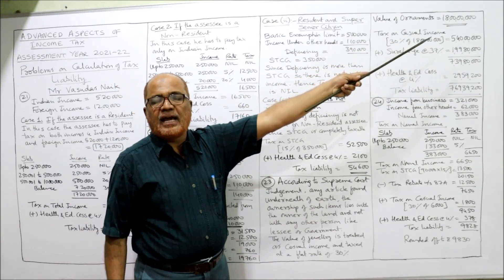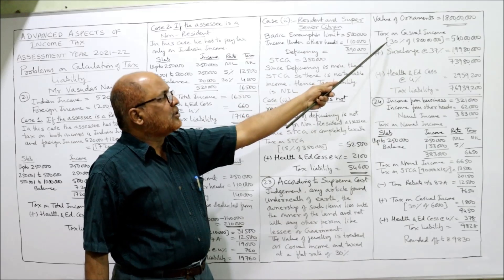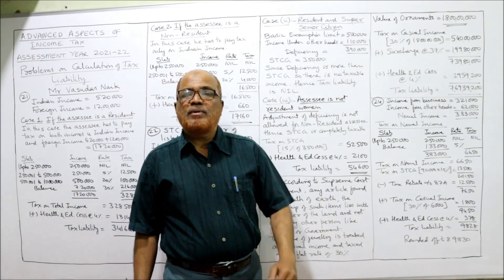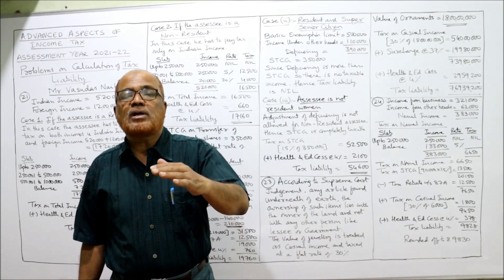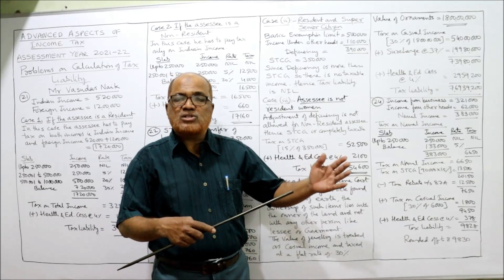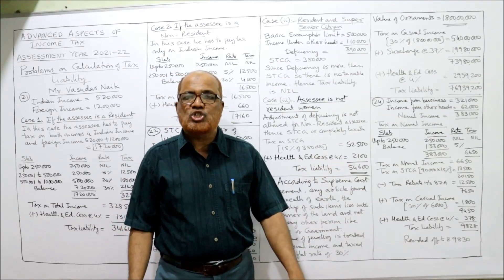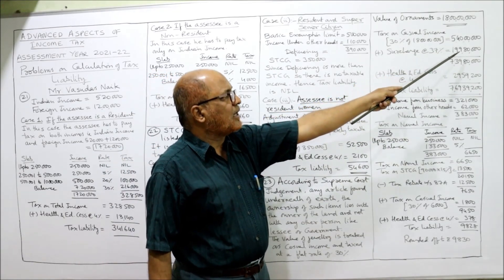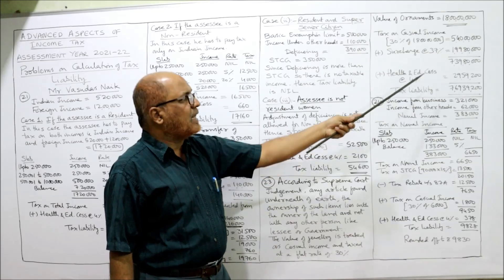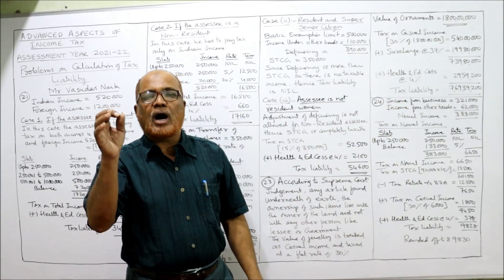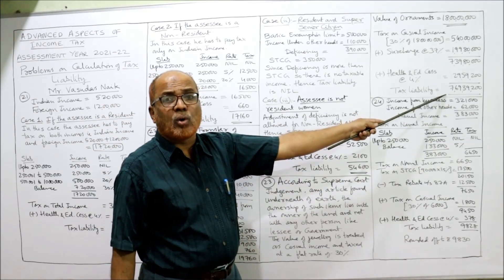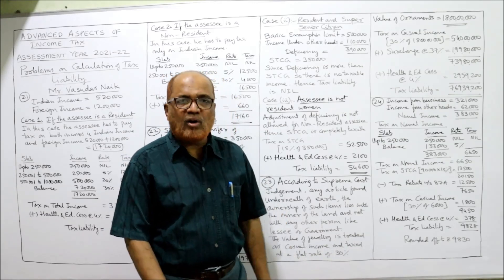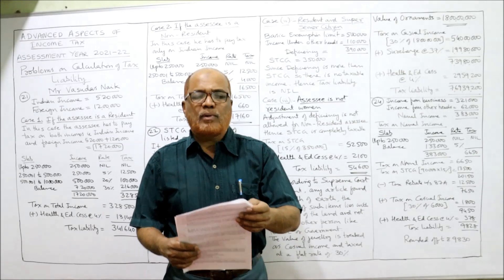Value of ornaments is ₹18 crore. Tax on casual income: 30% of ₹18 crore = ₹5,40,00,000. Surcharge is applicable at 37% because total income exceeds ₹5 crore. 37% of ₹5,40,00,000 = ₹1,99,80,000. Adding 4% health and education cess = ₹29,59,200. Total tax liability is ₹7,69,39,200. That is the end of problem 23.